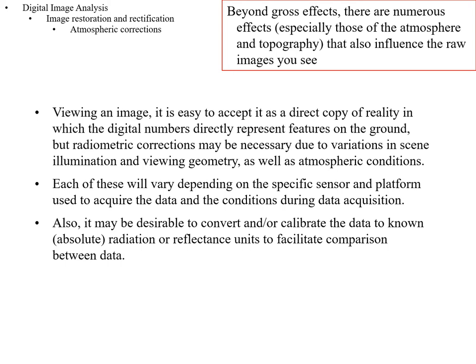We may want to calibrate to either radiance — brightness — or reflectance — percent of illumination being returned — in order to facilitate comparison between data. For example, an image taken in summer versus an image taken in winter: even if the conditions on the ground are similar, you're going to have different patterns of illumination. You'd want to calibrate to an absolute reference of reflectance or to more directly relate the brightness found on one image to the other.